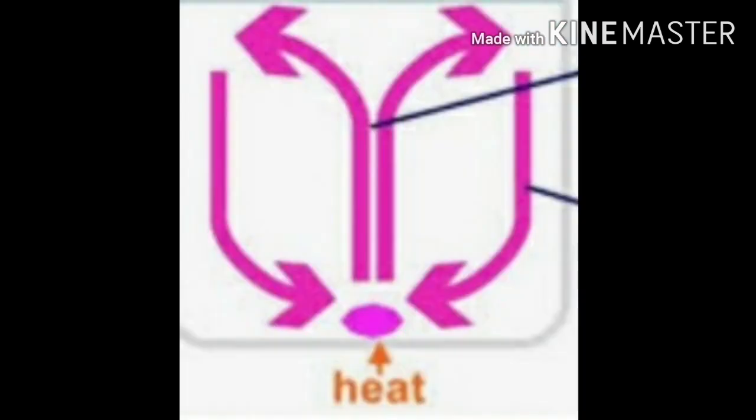We can see the purple streaks of hot water rise from the bottom of the flask up to the surface and then sink downward near the walls of the flask. These purple colored streaks seen in the water of the flask show the convection currents taking place in the water, which transfer heat from the bottom to the top.